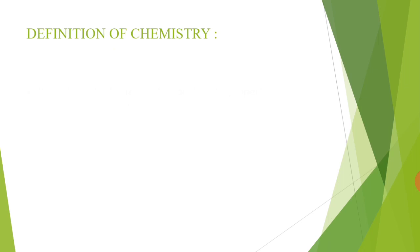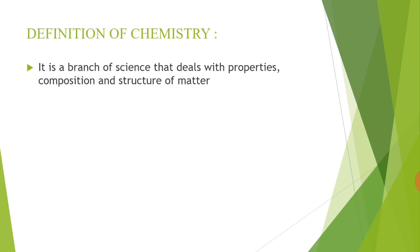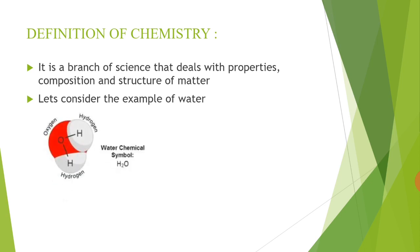Now we discuss the definition of chemistry. Chemistry is a branch of science that deals with the properties, composition, and structure of matter. What is meant by composition of matter? Let us consider the example of water. The composition of water means it is a combination of two hydrogen atoms and one oxygen atom which are chemically combined.